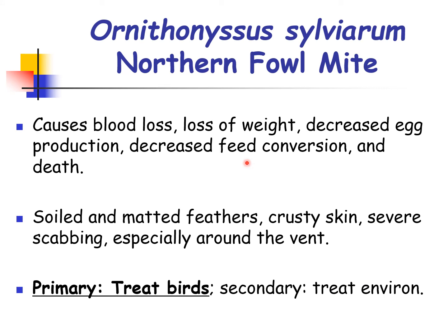For the significance of Ornithonyssus sylviarum, it can cause blood loss, loss of weight, decrease in egg production for layers, decrease in feed conversion efficiency, and death. It can also cause soiled and matted feathers, crusty skin, and severe scabbing, especially around the vent area. For treatment, acaricides should be applied primarily towards the birds and secondarily towards the environment.